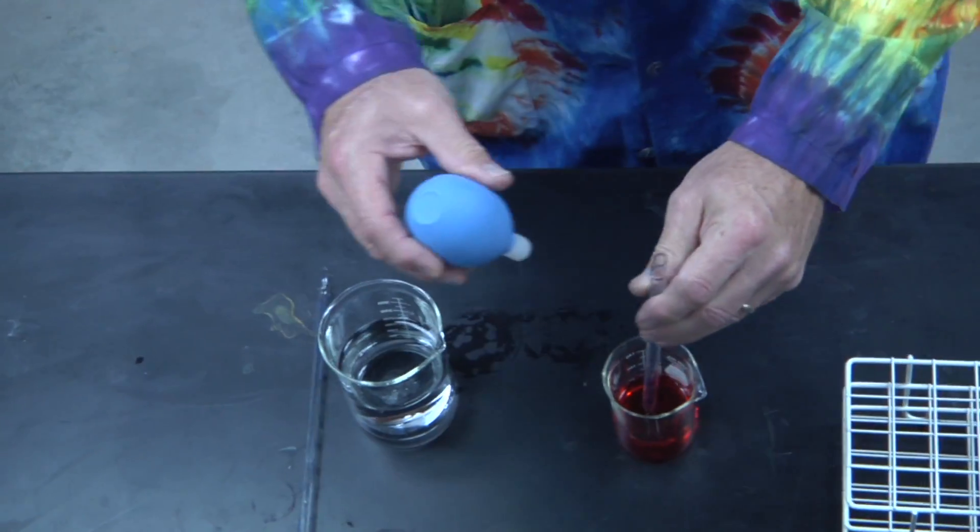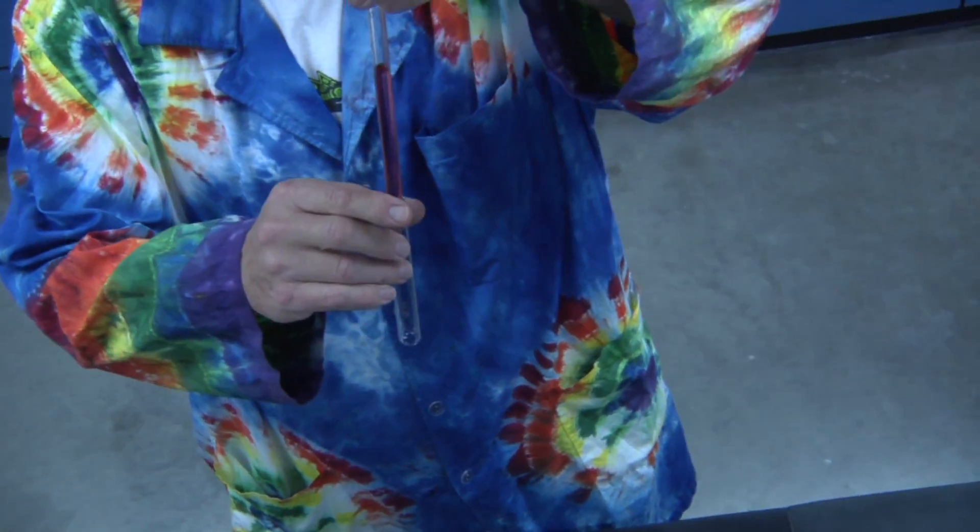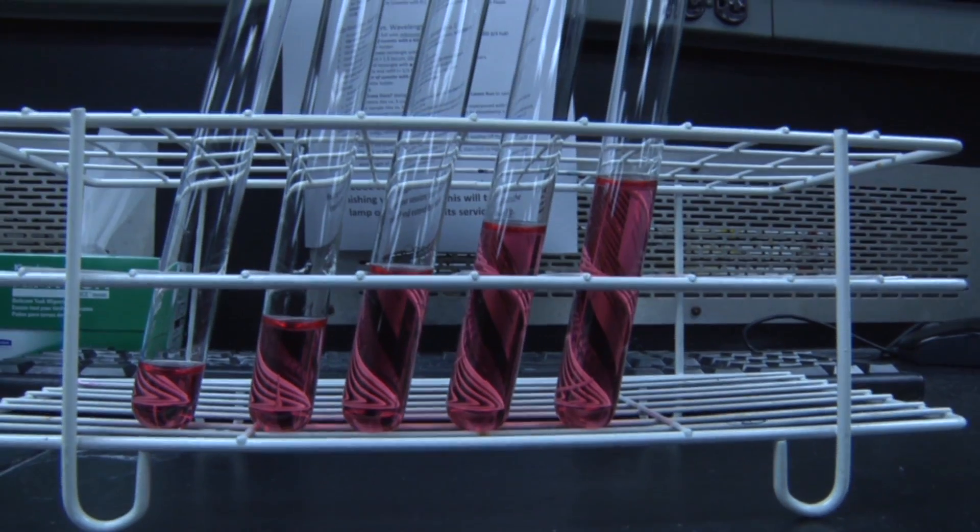Use a graduated pipette to transfer known amounts of the stock solution into a series of test tubes. The amounts should vary in a regular way.